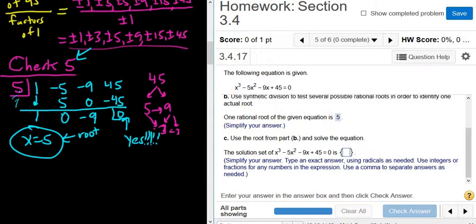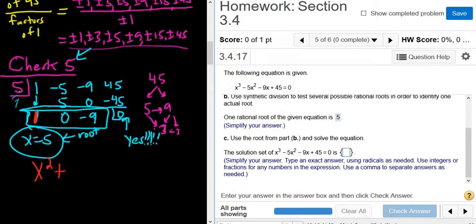All right. Now it says, use the root from part B to solve the equation. Okay. So what you do now is you have to start with 1 less. So this is a cubic function. So you have to start with x squared. So you're looking here and starting with x squared. So it's 1 times x squared plus 0 times x minus 9 equals 0.